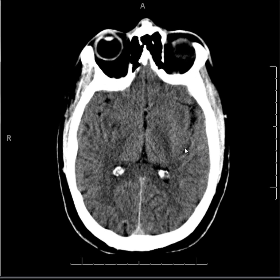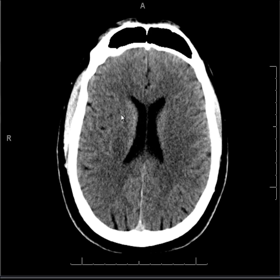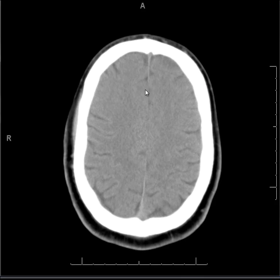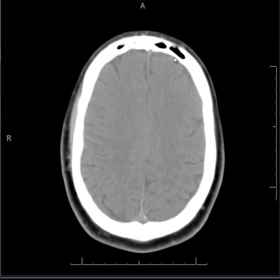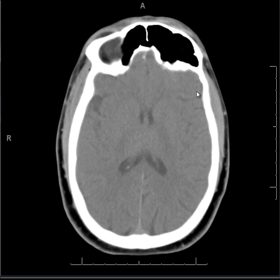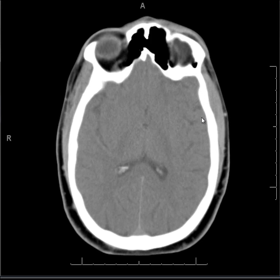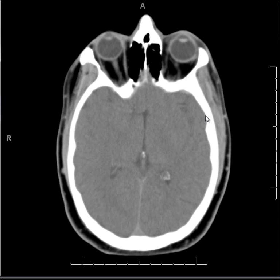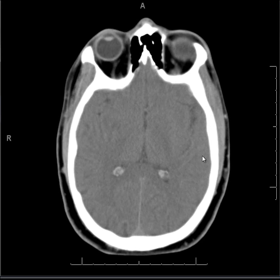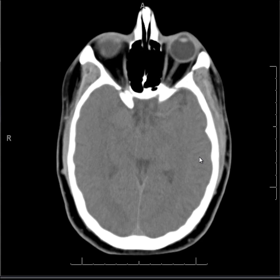On the axial images, go back to the parenchymal window and widen it a little bit. This makes visualization of extra-axial spaces easier. In this case it is a normal study, so there's nothing to see. But in cases where you have subdural collections, even small subdural collections, they might become much more visible on a wider window.